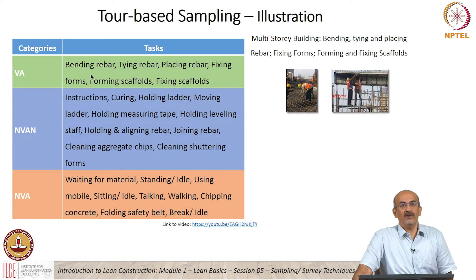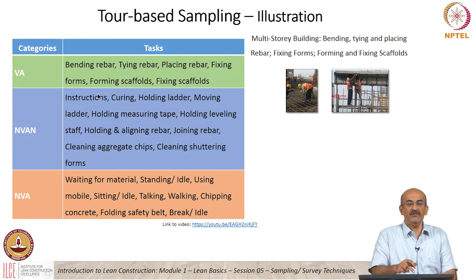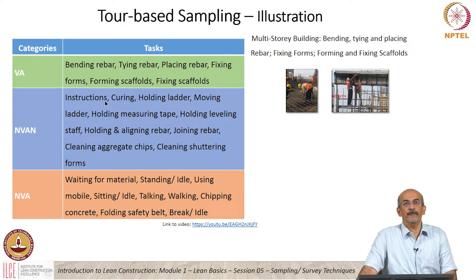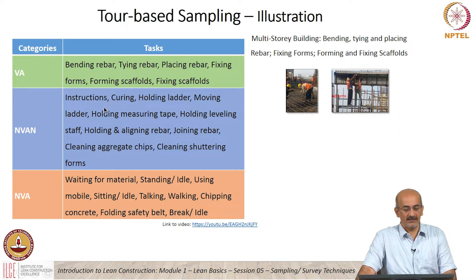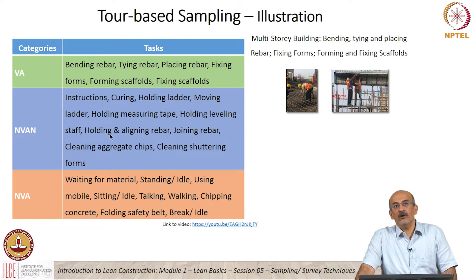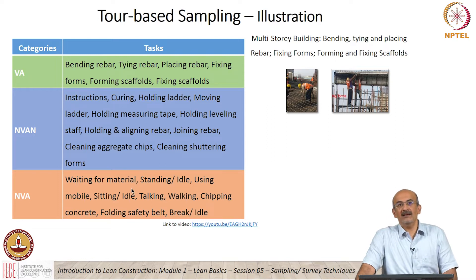Non-value added but necessary activities are those you can see here: instructions, holding, ladder, moving — all of these are necessary. And non-value added includes waiting, standing idle, using mobile — all of these are non-value added.